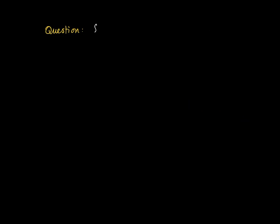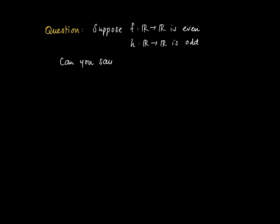A question: suppose that we have two functions. One is f defined on ℝ, which is even, and another function h, also with domain ℝ, which is odd. We are not restricted in our domain, so we may look at the composition of the two functions. Can we say anything about the composition f composed with h? Can we say anything about the symmetries of that composition?